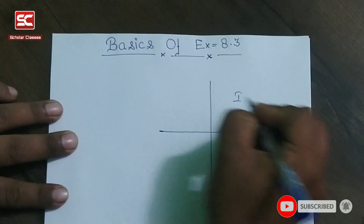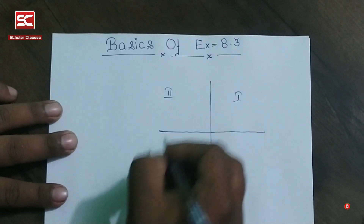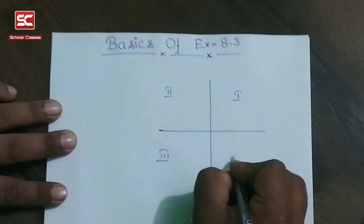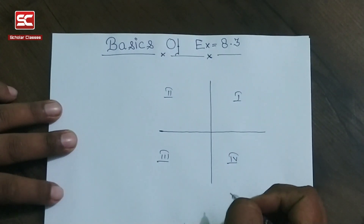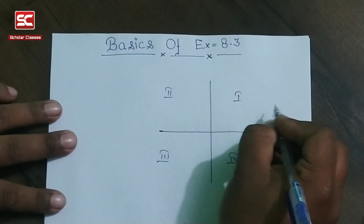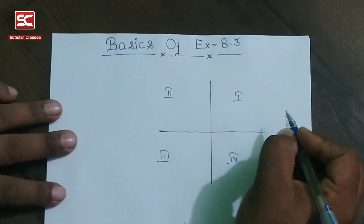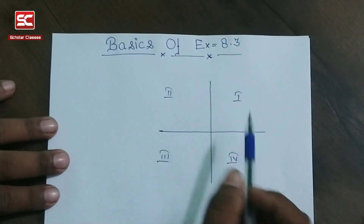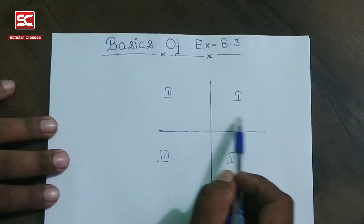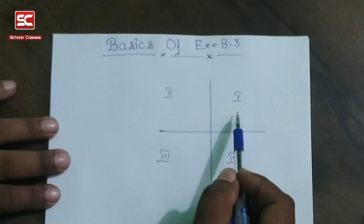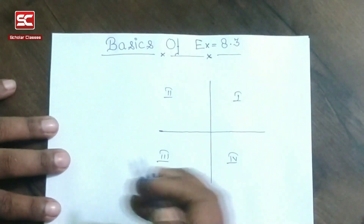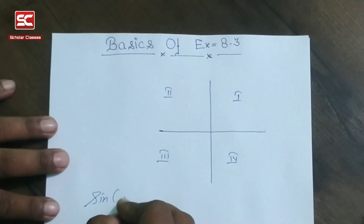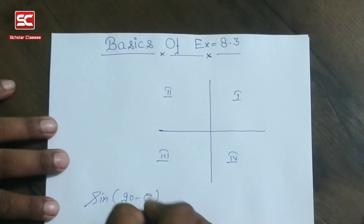it is first quadrant, second quadrant, third quadrant, and fourth quadrant. In the first quadrant, all trigonometric values are positive. In Exercise 8.3, we use the trigonometric values which come under quadrant one.